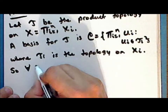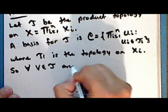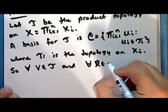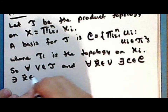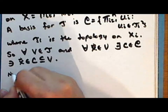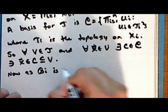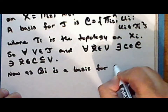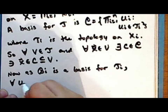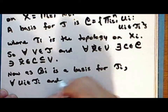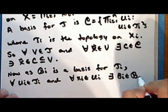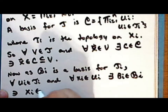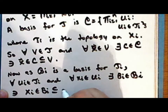For every open set V in the product topology and for every point in that open set, there exists an element C in the collection script C such that the point is in this element, which is a subset of the open set V. Now, as the collection script B sub i is a basis for the topology tau sub i, we have that for every open set U sub i and for every point X sub i in that open set, there exists an element B sub i in the collection script B sub i such that the point X sub i is in this element, which is a subset of the open set U sub i.